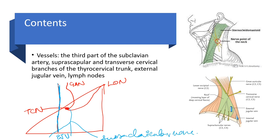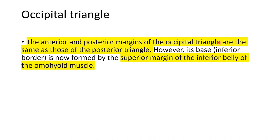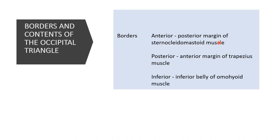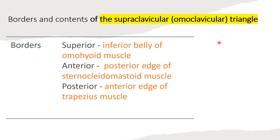Looking at the picture with a pointer: the nerve point contains the great auricular nerve — note it is 'great' not 'greater' — the transverse cervical nerve, the lesser occipital nerve, the supraclavicular nerves, the external jugular vein, and the internal jugular vein. This nerve point is also known as Erb's point, and it is present in the posterior triangle of the neck.